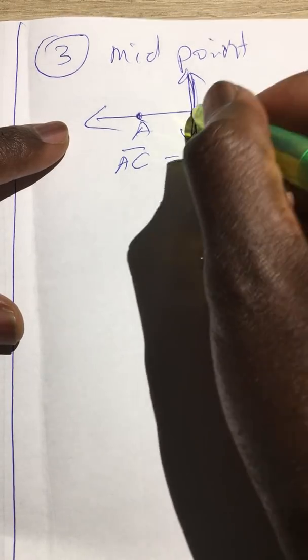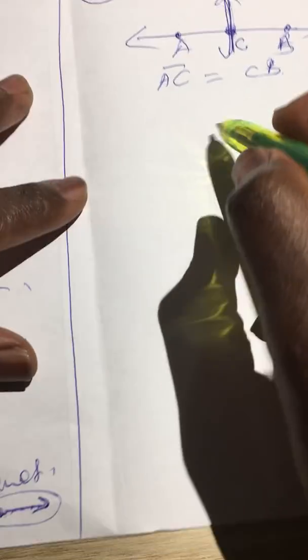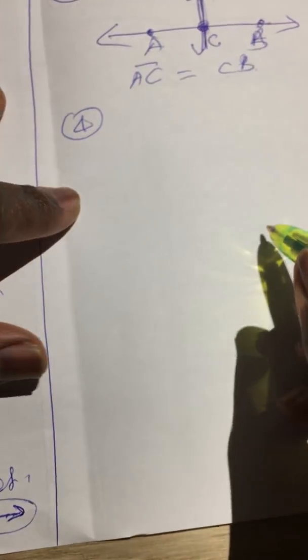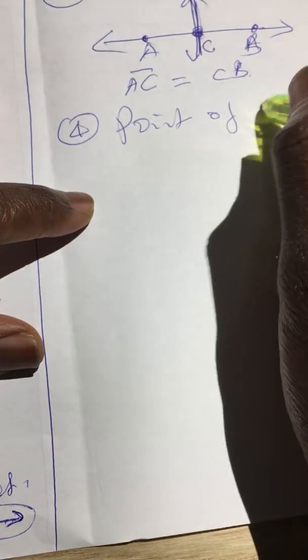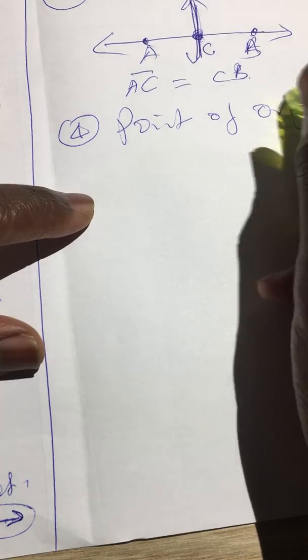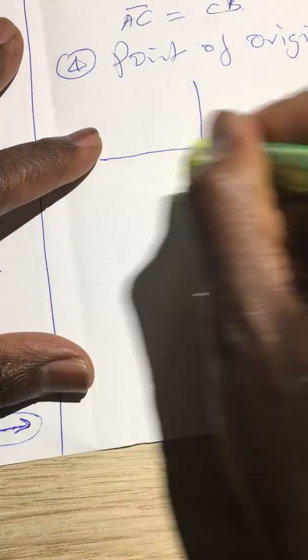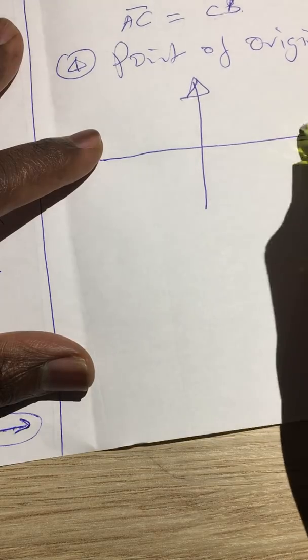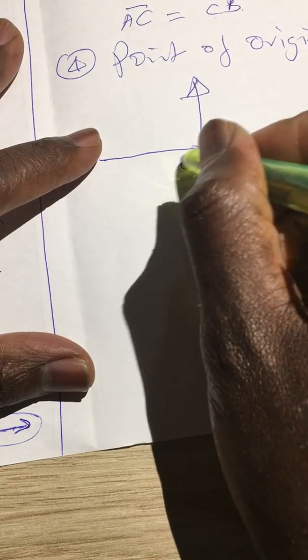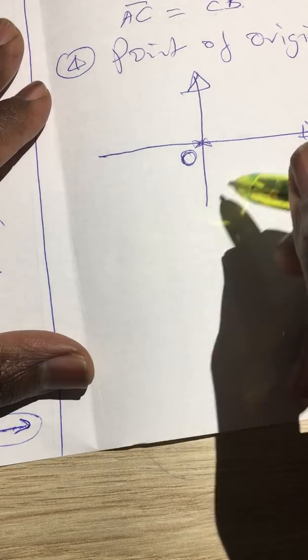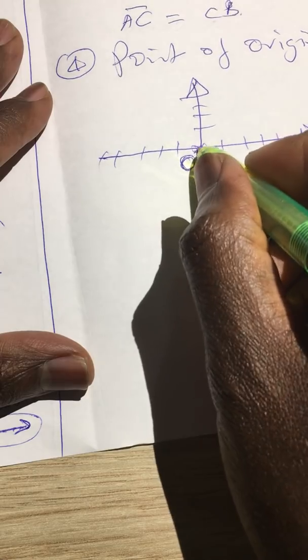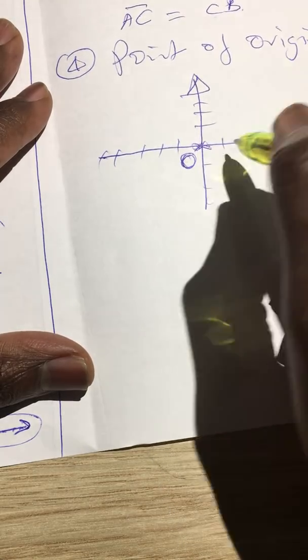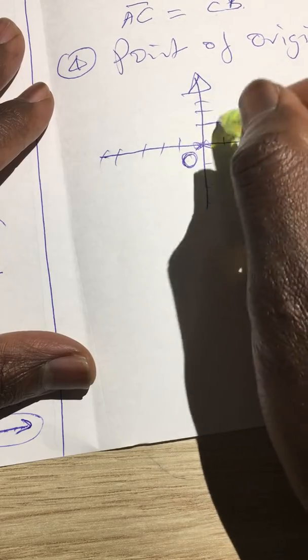Number four, we can look at the point as the point of origin. Point of origin comes as a result of the Cartesian coordinates. For example, we have an arbitrary point zero there, which is a point of origin where every other point will come from. Because you start from the origin and count to reach any location, you must start from the origin, and that is the point of origin.